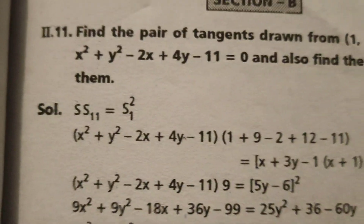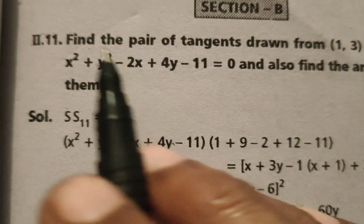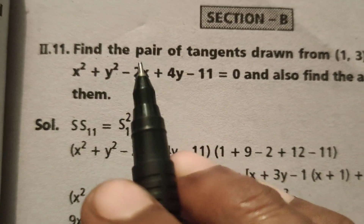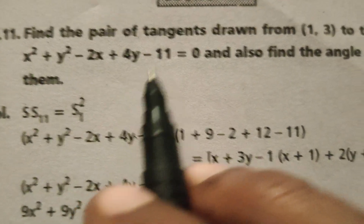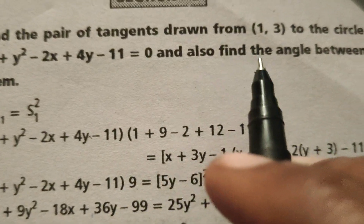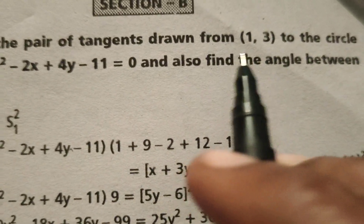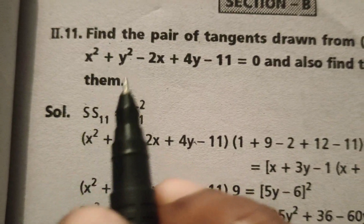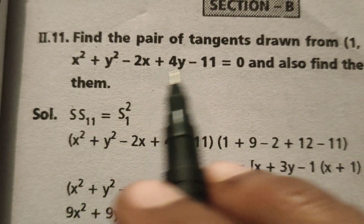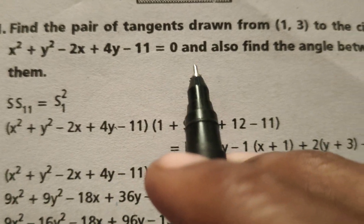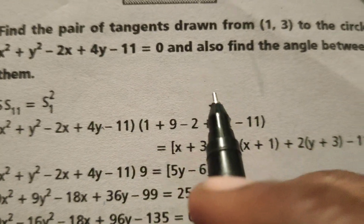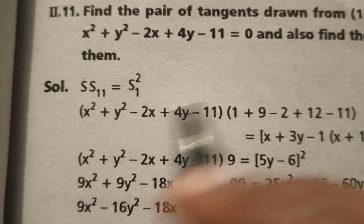Hi everyone, this is Dr. Aethi. Today we are going to explain this problem: Find the pair of tangents drawn from the point (1,3) to the circle x² + y² - 2x + 4y - 11 = 0, and also find the angle between them.